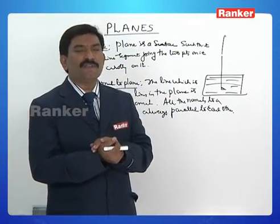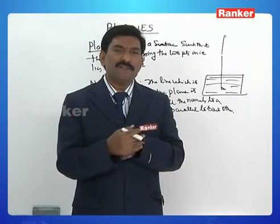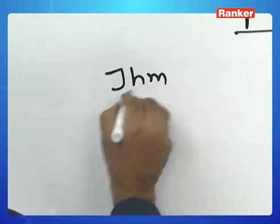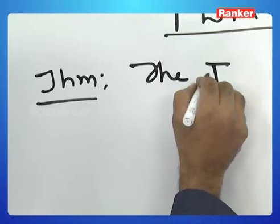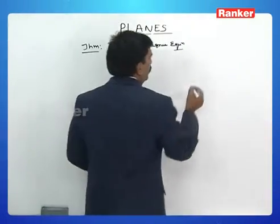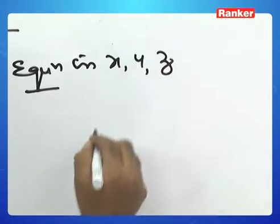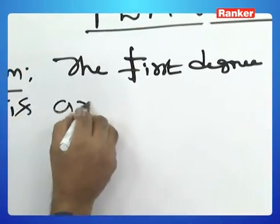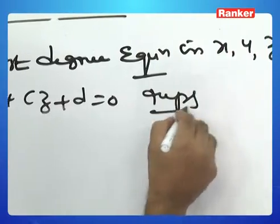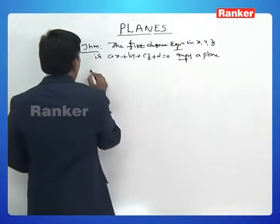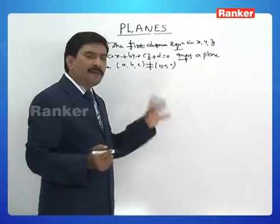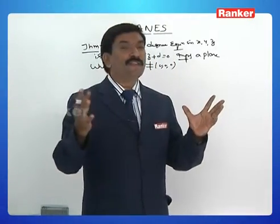What is the general equation of a plane? How do you represent a plane with a general first-degree equation in X, Y, and Z? The first-degree equation AX + BY + CZ = 0 represents a plane, where the ordered triple (A, B, C) is not equal to (0, 0, 0) — that is, A, B, and C cannot all be zero simultaneously.